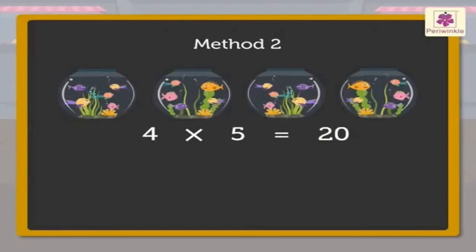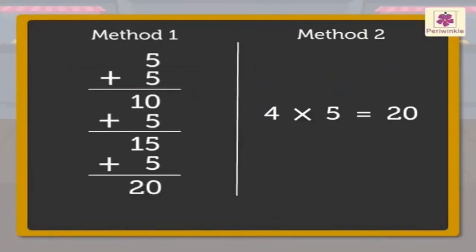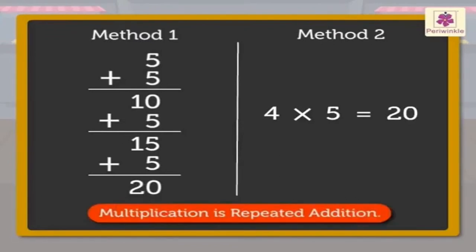It can be read as 4 multiplied by 5 is 20. 4 times 5 is 20. Or, 4 fives are 20. When we compare both the methods, we can see that multiplication is repeated addition.